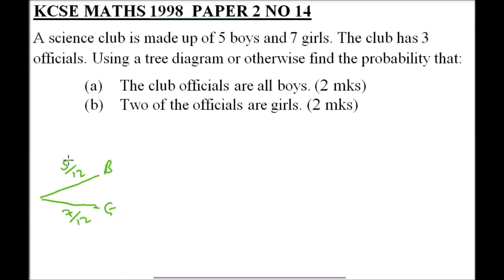For the second selection, we can have a boy selected or a girl selected. Since a boy was selected in the first round, the number of boys reduces to four and the total number of members remaining reduces to 11. If a girl is selected, we have 7 out of 11, because the number of girls remains the same.